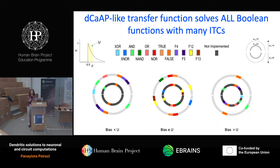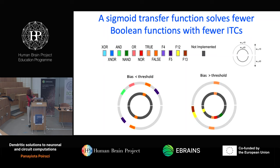How different is this set of solutions provided by dendritic action potentials in human neurons compared to a classical sigmoidal function, which is what we've seen extensively in animals? With a sigmoidal function you can still solve some combinations depending on the bias value, but you have a much smaller solution space. Essentially, having this type of dendritic spike described in human neurons allows a model neuron to have a much higher computational capacity by solving many more logical operations. That's the take-home message.